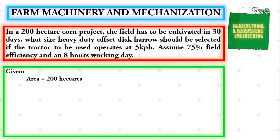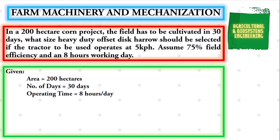Assume 75% field efficiency in an eight-hour working day. We begin by identifying our given values: area of 200 hectares, number of days of 30, operating time of eight hours per day, speed of five kilometers per hour, and field efficiency of 75 percent.